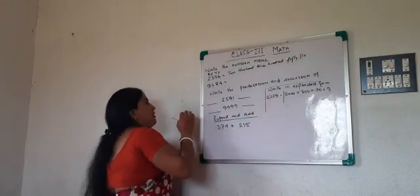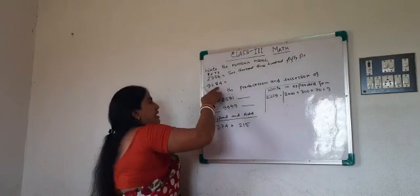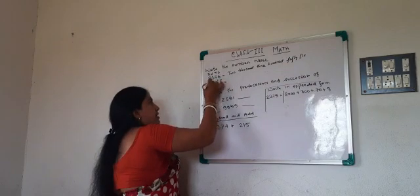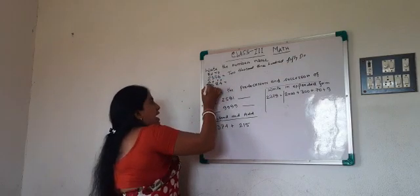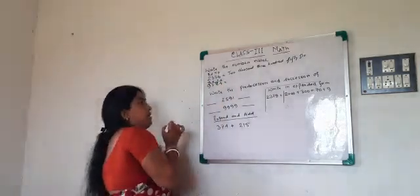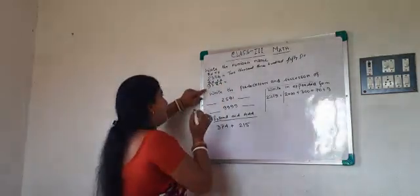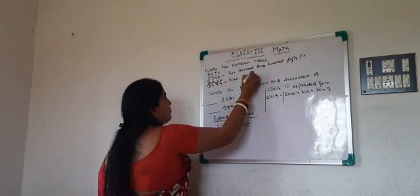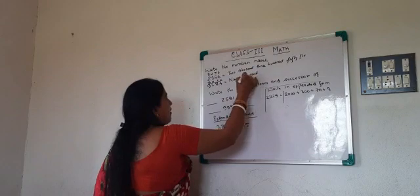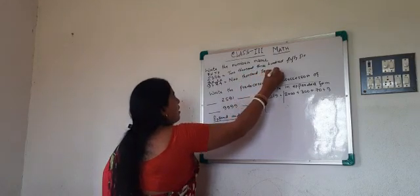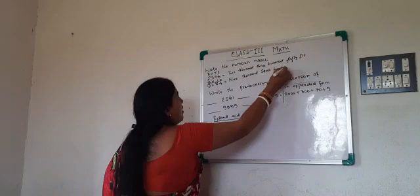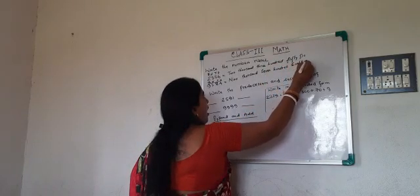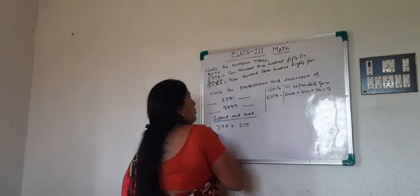Similarly next is 9784. You have to write 1s, 10s, 100s and 1000 place. It will help you to indicate the digits properly. In the same way write the number name. That is 9784.